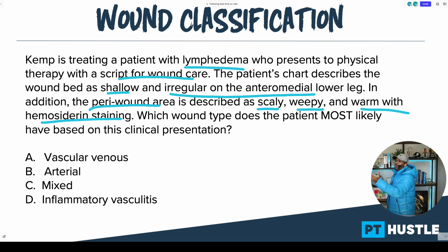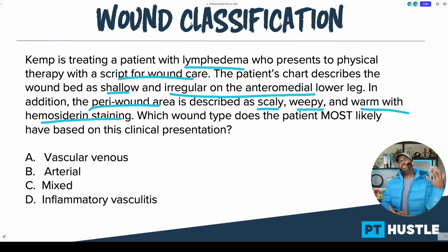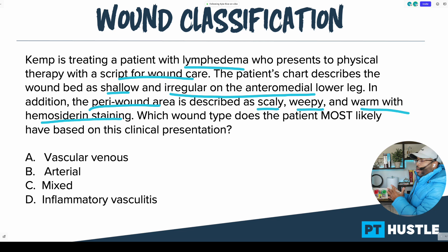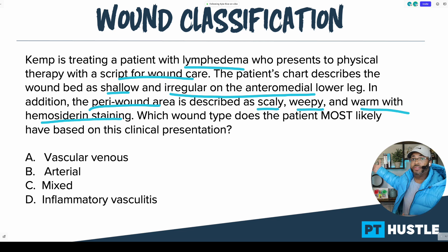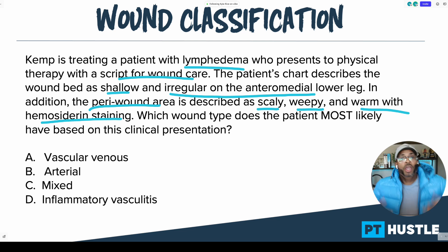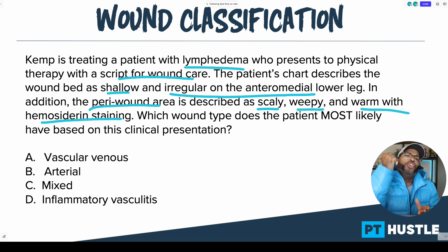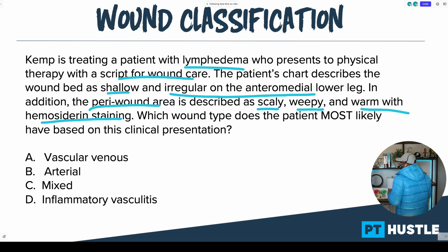The question asks: which wound type does the patient most likely have based upon this clinical presentation? I knew the test maker was going in the direction of classifying the wound based on the information given. So go down in the comment box — what is your answer choice? What are you confident about? Put that down below. Answer A says vascular venous.